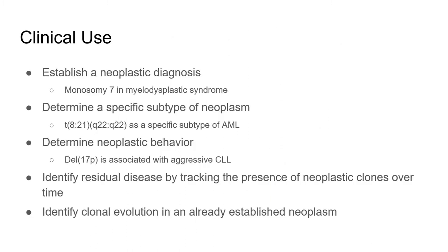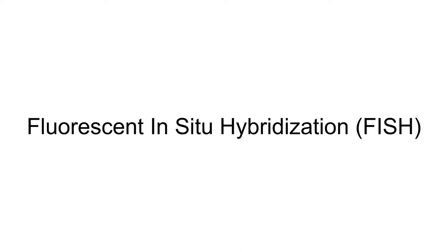When do we use karyotypes? They're used to help establish a neoplastic diagnosis such as in myelodysplasia, to determine a specific subtype of a neoplasm such as in genetically defined acute myeloid leukemias, to gain prognostic information about a neoplastic process, or for disease and treatment monitoring by tracking a previously established clone.